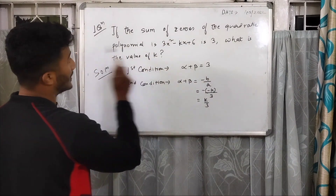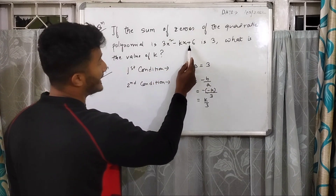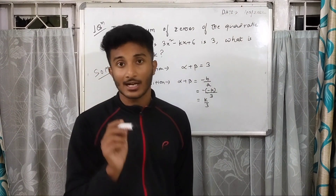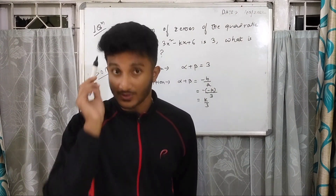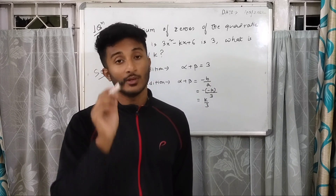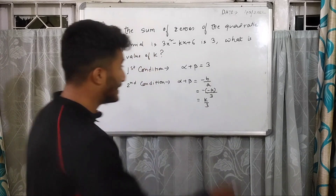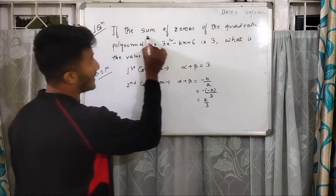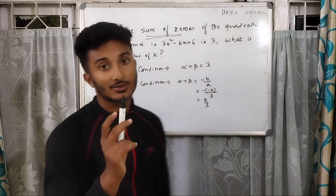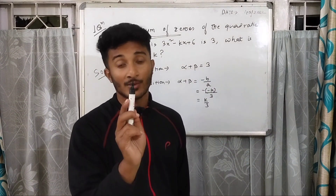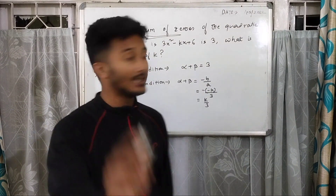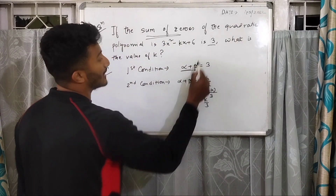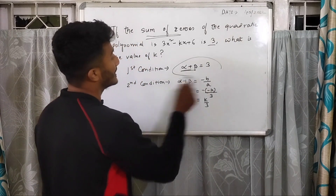The first question is: if the sum of the zeros of the quadratic polynomial 3x² − kx + 6 is 3, what is the value of k? We have to assess the conditions given carefully. The first condition is the sum of the zeros. We know a quadratic polynomial has two zeros, alpha and beta. So alpha plus beta equals 3 — this is our first condition.